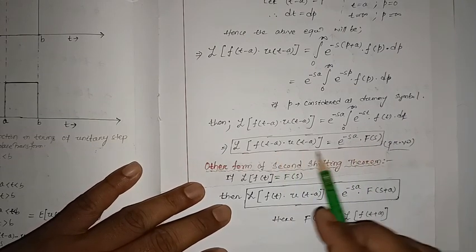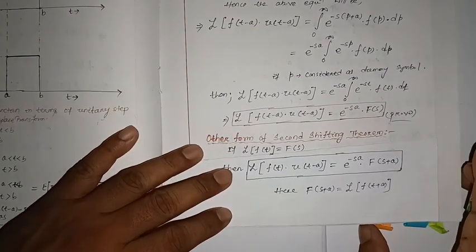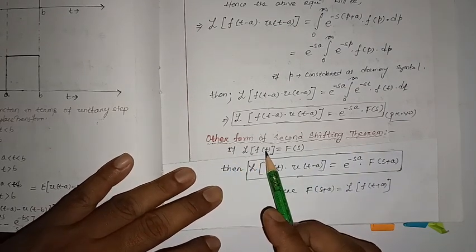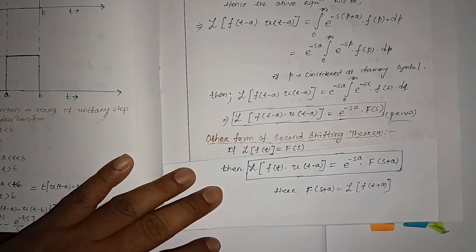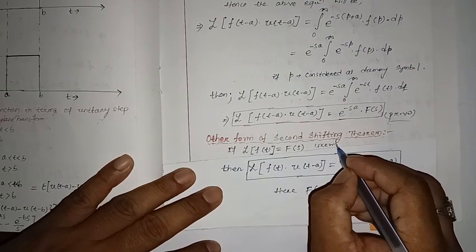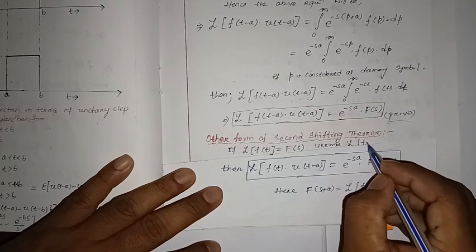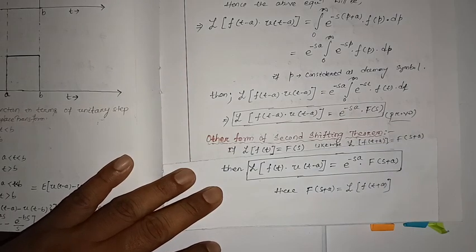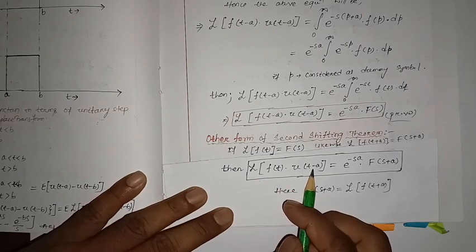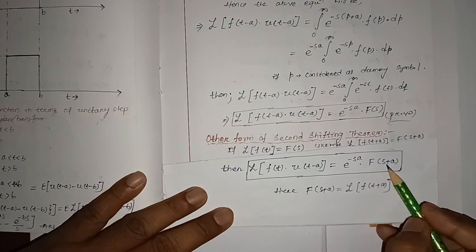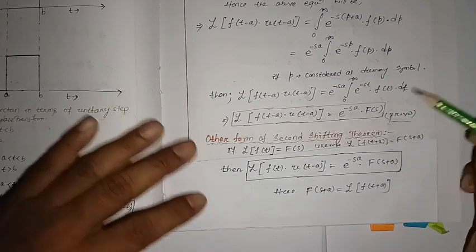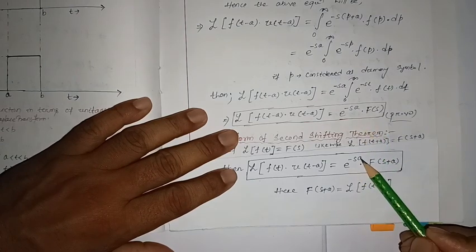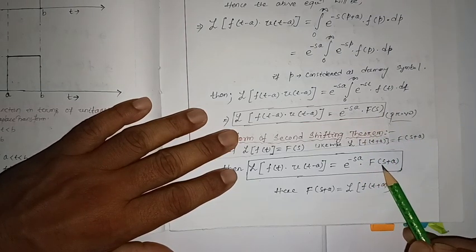Hence, the Laplace transform of f(t minus a) into u(t minus a) equals e to the power minus sa into capital F(s). Remember this — it is most important for solving numericals. There is also another form of the Second Shifting Theorem: the Laplace transform of f(t) into u(t minus a) equals e to the power minus sa into F(s plus a).